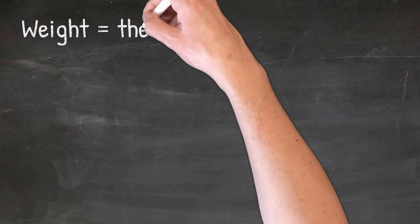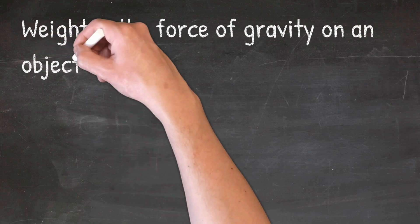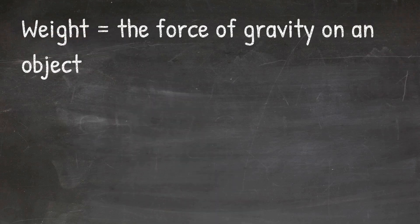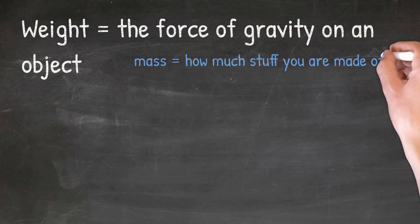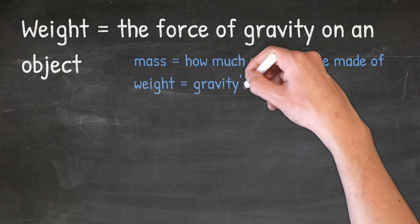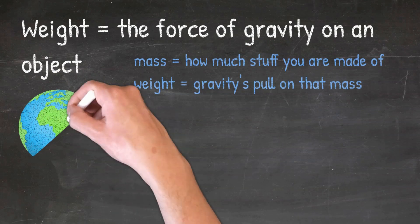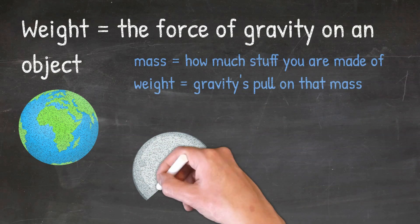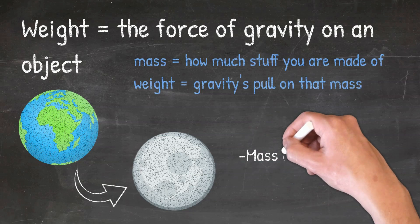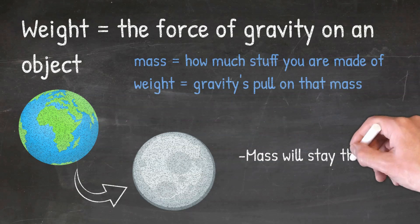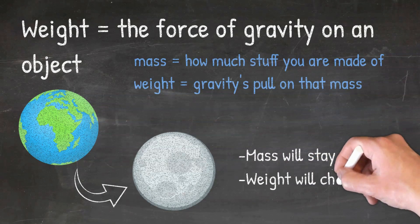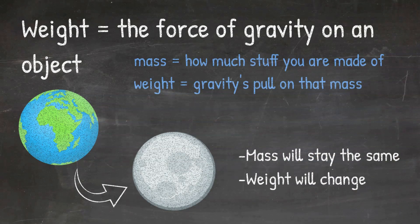The weight of an object is simply the force of gravity on that object. This is different from the mass. The mass of an object is the amount of matter in that object — how much stuff it is made up of — and weight is gravity's pull on that mass. So if you are on the Earth and then travel to the Moon, your mass will stay the same, but your weight will change because gravity is different on the Earth versus the Moon.